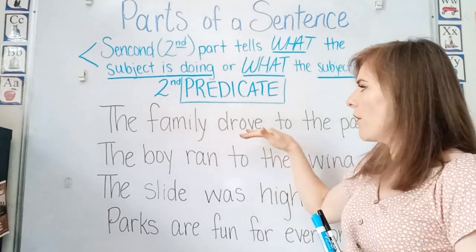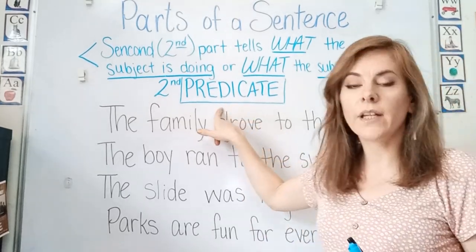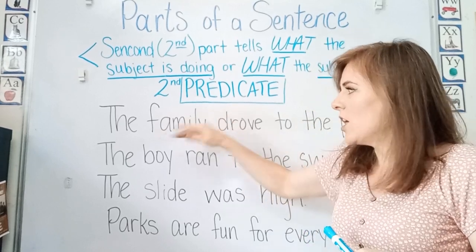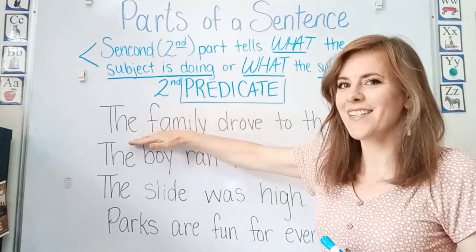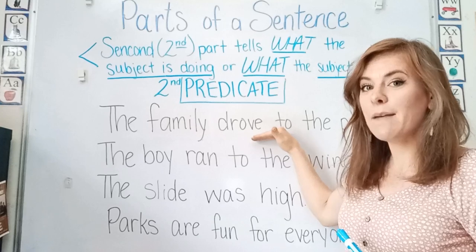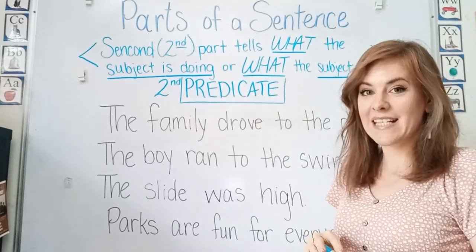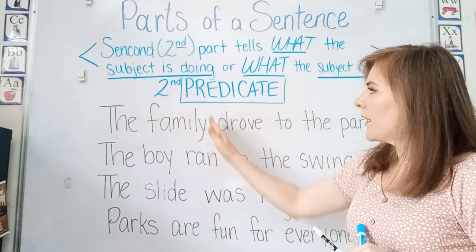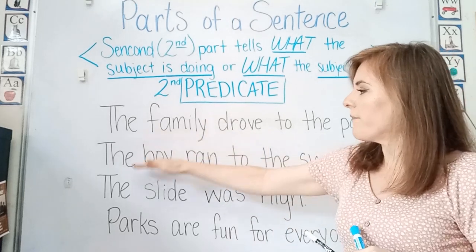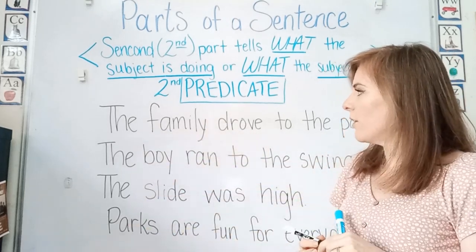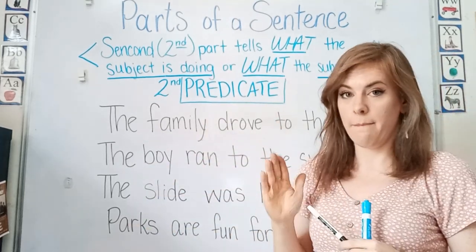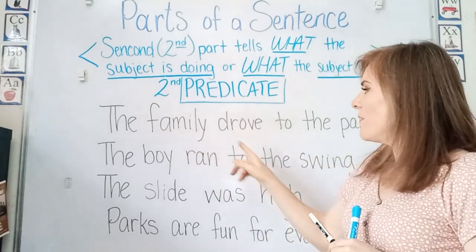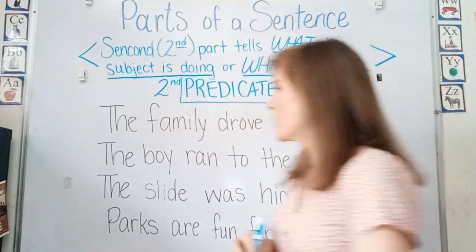And this part of our sentence is called the predicate. So the first part is our subject and the second part is the predicate. We're going to look at these sentences here, and we're going to divide them between the subject and the predicate, and then we'll look at the predicate part of the sentence.